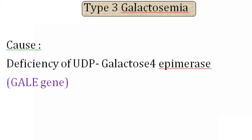Coming to type 3 galactosemia, the cause is a defect in the enzyme UDP galactose-4-epimerase, due to a mutation in the GALE gene which codes for this enzyme. The symptoms of this condition are also similar to type 2 galactosemia, and this is also a milder condition like type 2 galactosemia.